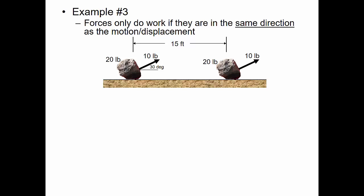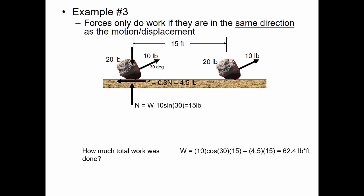Now I've got ten pounds of force being pulled at a thirty-degree angle over fifteen feet. The coefficient of kinetic friction is still 0.3. Solving for the normal force gives fifteen pounds, and friction is then 4.5 pounds. For the force applied by the person, we're only interested in the component in the direction of motion: ten times cosine of thirty.